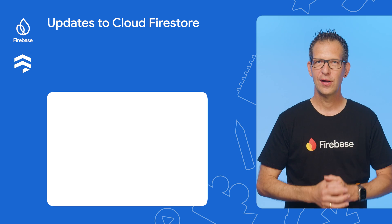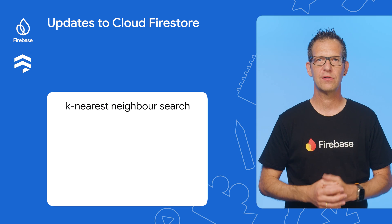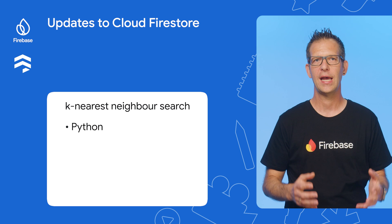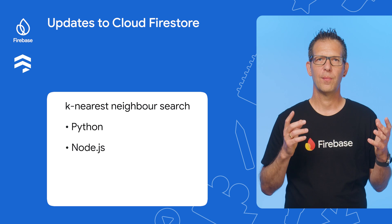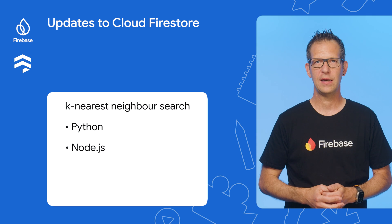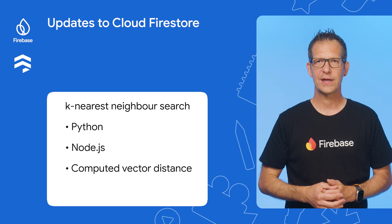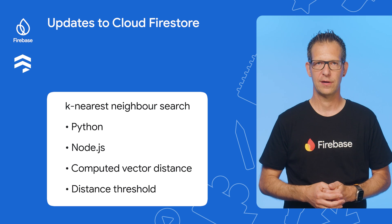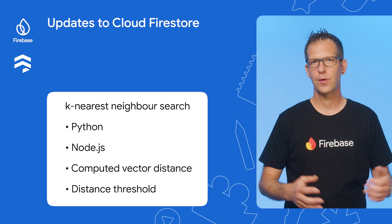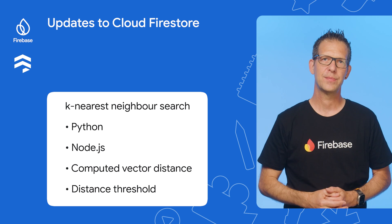But that's not all. Support for k-nearest-neighbor vector search has just gone to general availability for Firestore's Python and Node.js SDKs. This allows you to perform powerful vector searches and combine them with inequality filters. You can even retrieve the computed vector distance and specify a distance threshold for even more refined results. The team is working on adding support for client SDKs too, so stay tuned for an update on this soon.